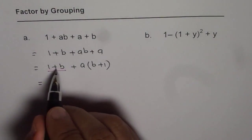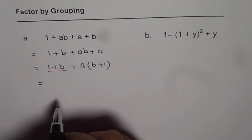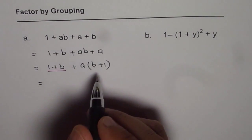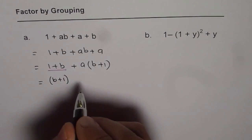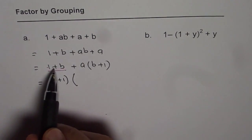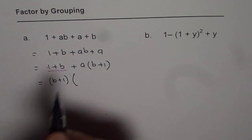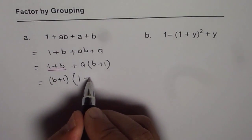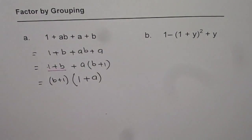Now, if you consider these as two different terms, then b + 1 is common, right? So we can write b + 1 as a common term, leading to 1 + b with a coefficient of one. And here we have a. So we get 1 + a.